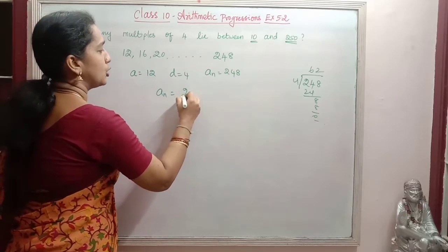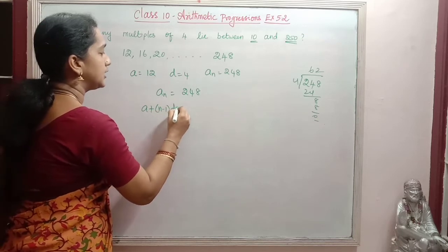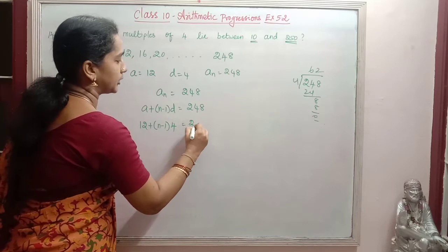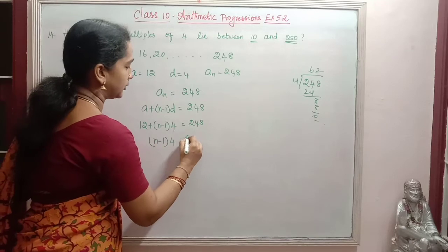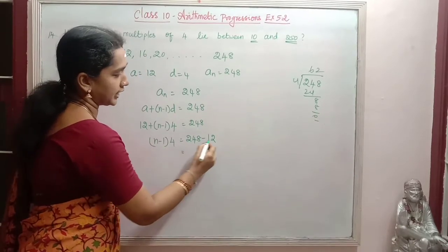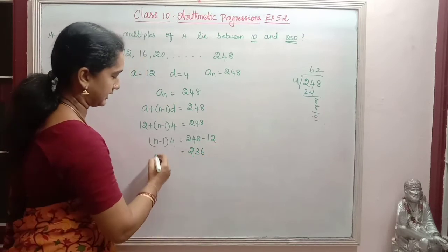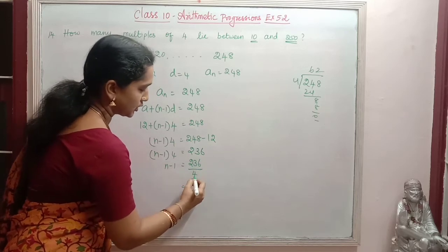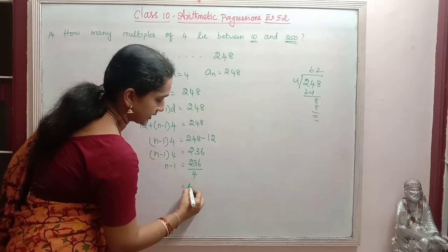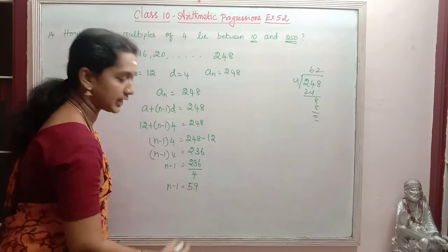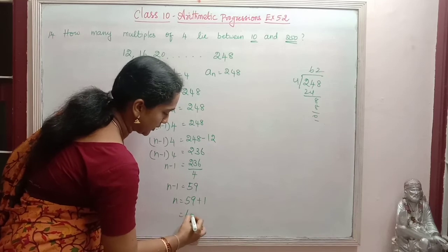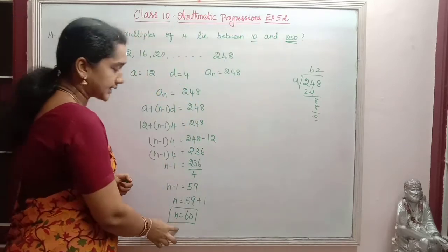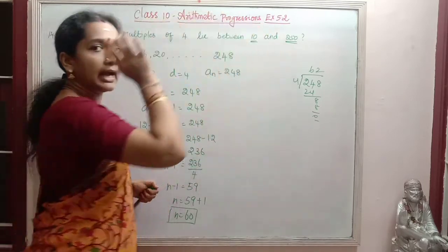So, Aₙ = 248. Using A + (n−1)×D = 248: 12 + (n−1)×4 = 248, so (n−1)×4 = 236, giving n−1 = 236 ÷ 4 = 59, therefore n = 60. There are 60 multiples of 4 between 10 and 250.